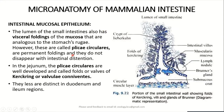The intestinal mucosal epithelium shows many foldings called visceral foldings on its luminal surface. These foldings are similar to the rugae of the stomach, but they are called plica circularis because they are permanent foldings — they do not disappear with intestinal distension or expansion. In the jejunum region, these plica circularis are well developed and are called folds or valves of Kerckring, or valvulae conniventes. They are less distinct in the duodenum and ileum regions.